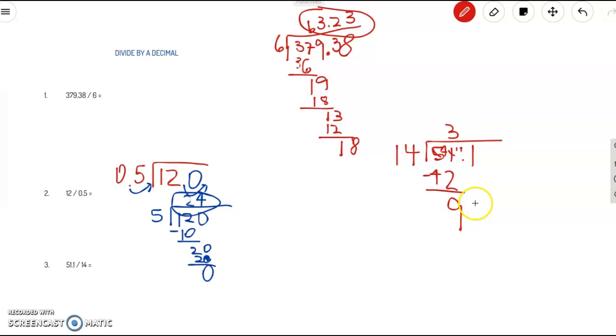Bring down the 1. 14 goes into 91, 6 times. 6 times 14 is 84. We got to borrow again. So 9 becomes 8 and 1 becomes 11. 11 minus 4 is 7.